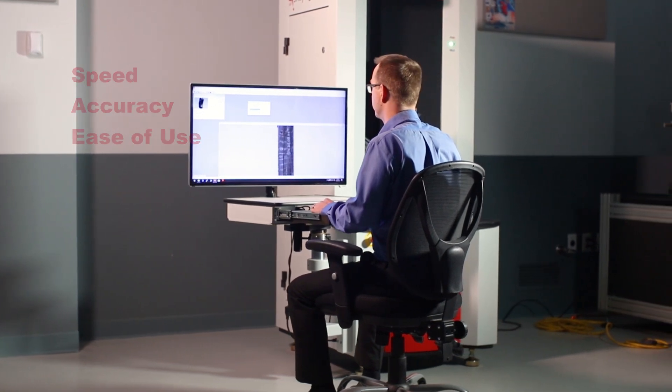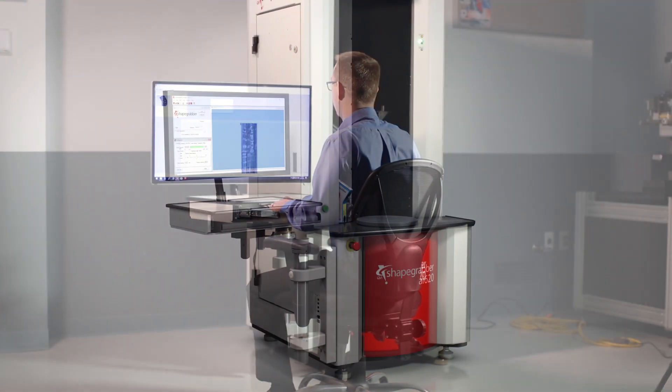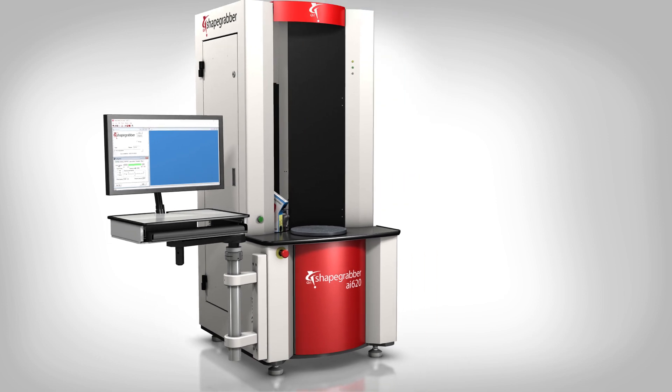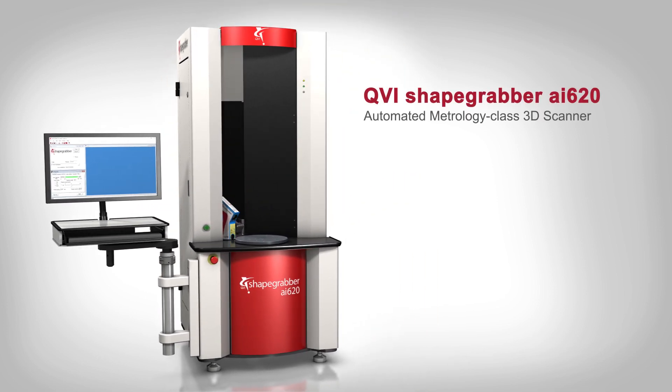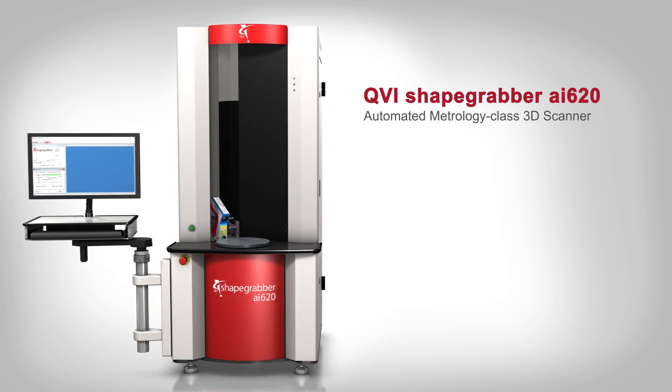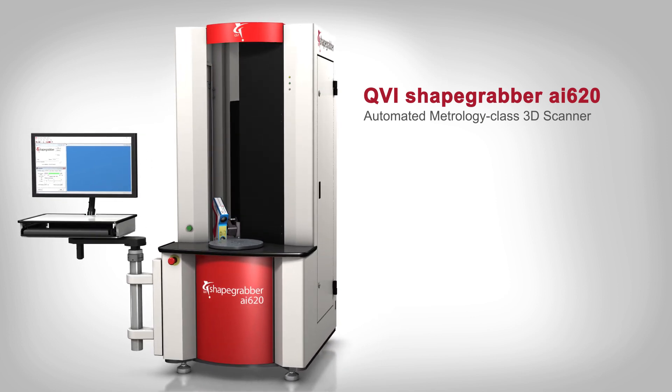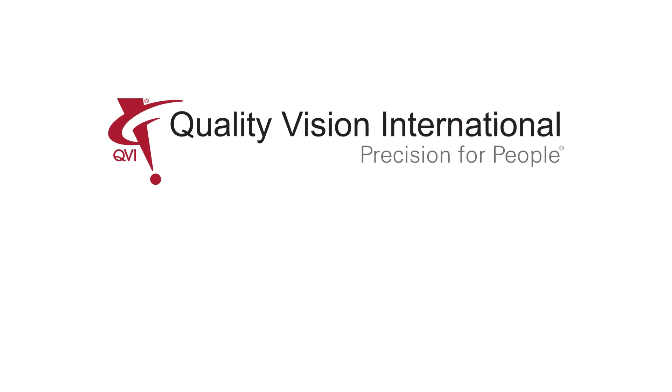The ShapeGrabber AI620 from QVI, a metrology class 3D scanner that is simple to use and delivers the fastest time to results in its class. Precision measurement tools designed for the people who use them. People like you. Visit QVII.com slash ShapeGrabber to learn more and to schedule a demo. Quality Vision International. Precision for people.